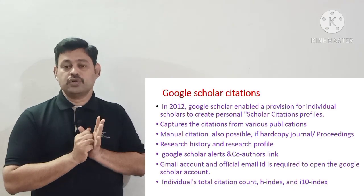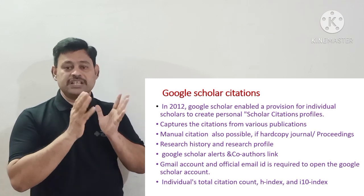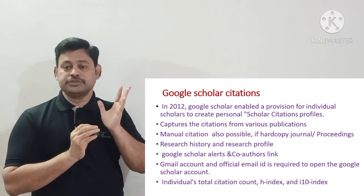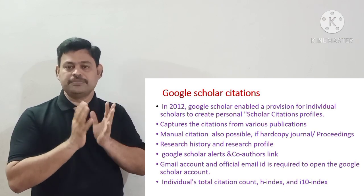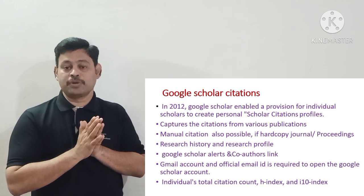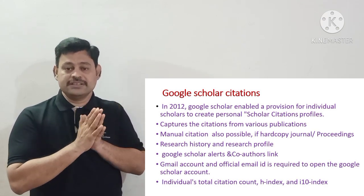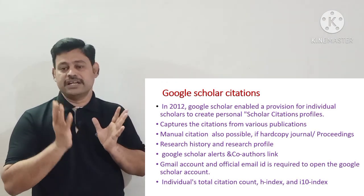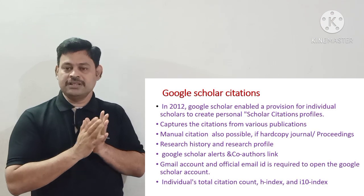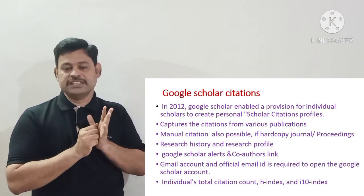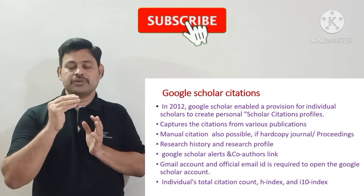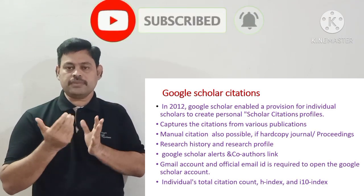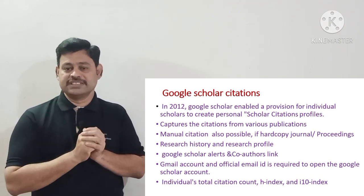The Google Scholar Citation feature was enabled in 2012. It provides a provision for an individual scholar to create a personal citation profile. Google Scholar Citation captures citations from various publishers — your article may be from any publisher such as ScienceDirect or others. Citation means when a particular article of yours is used by someone and listed in their references.